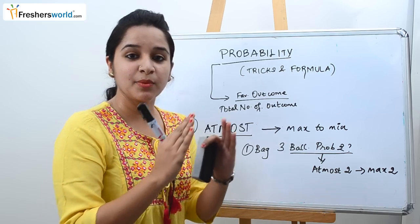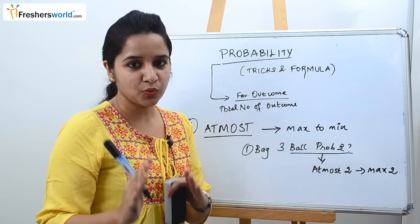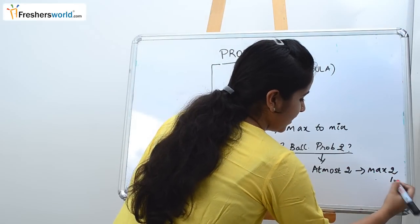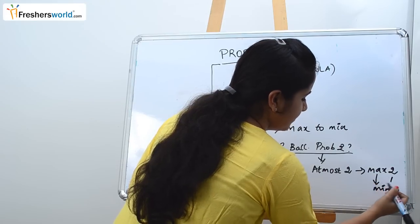So maximum is two balls, then the middle part is one. So maximum is two balls then minimum that you need to know is zero. So maximum to minimum.